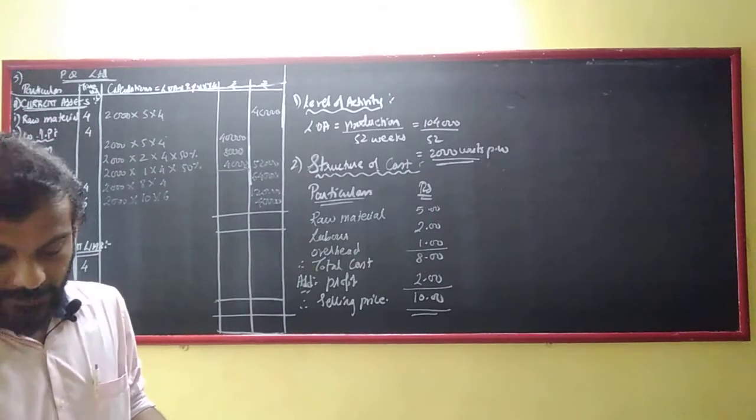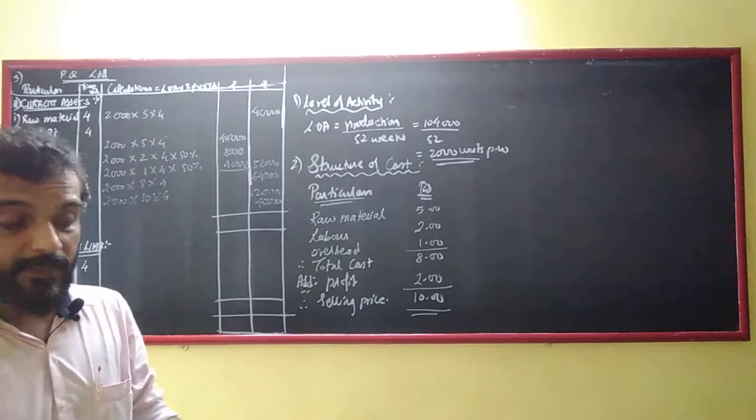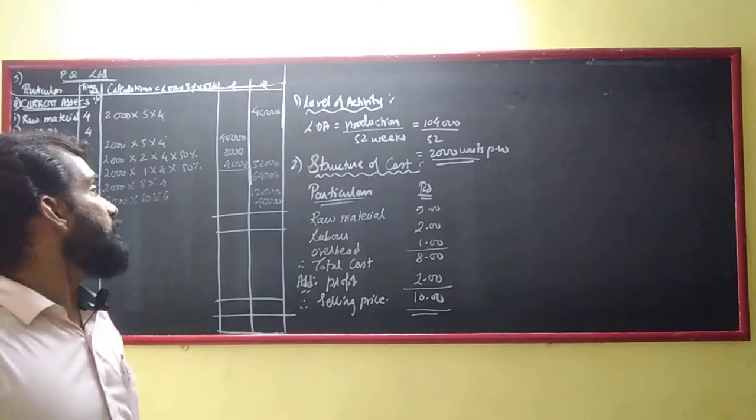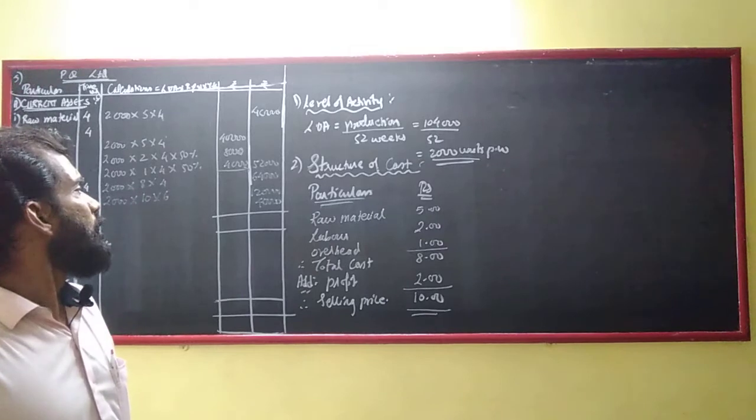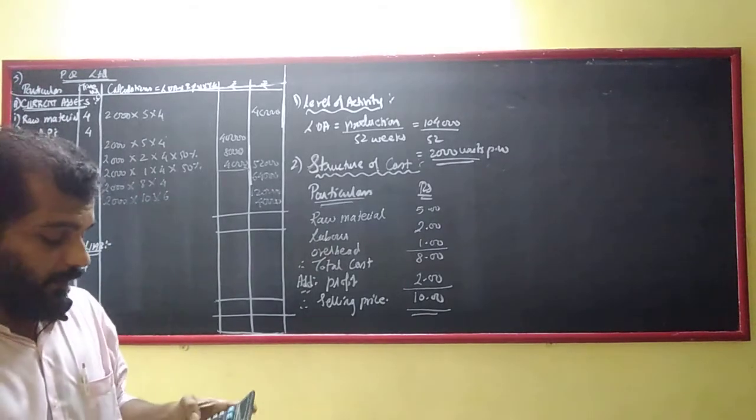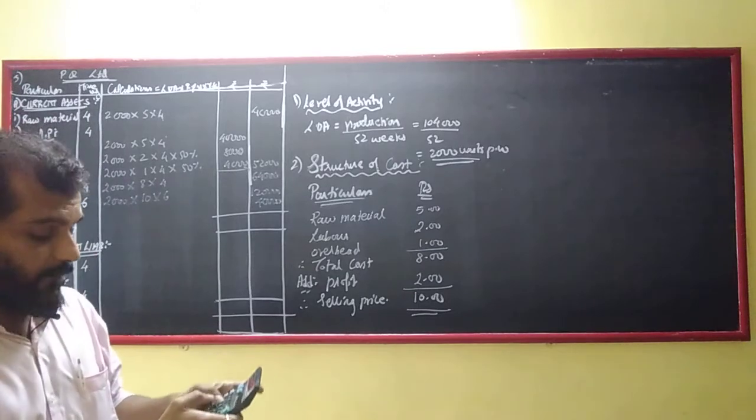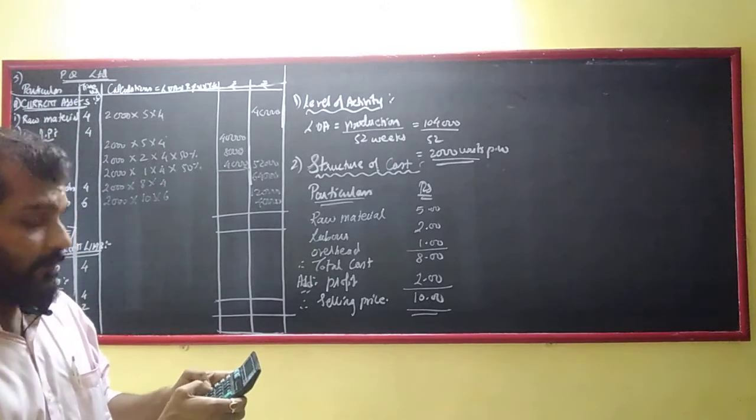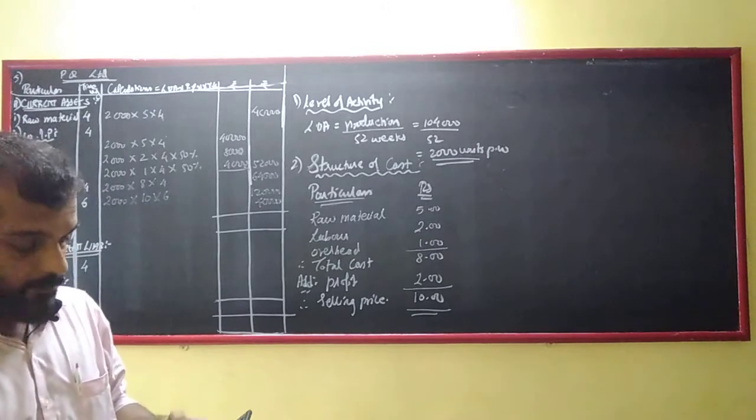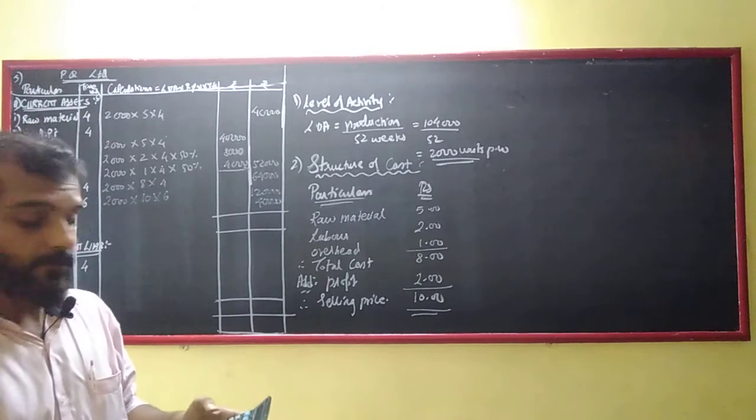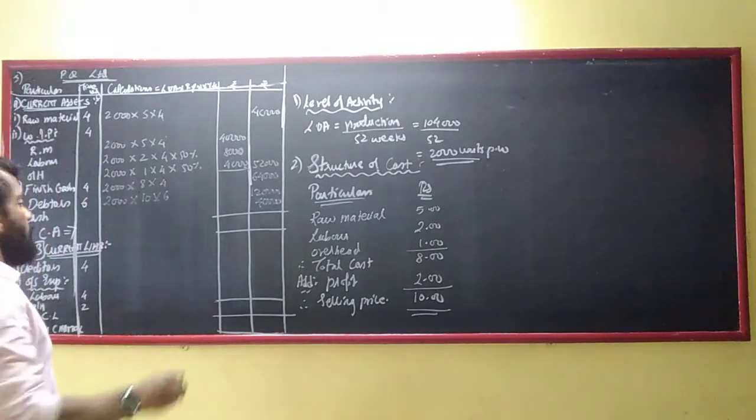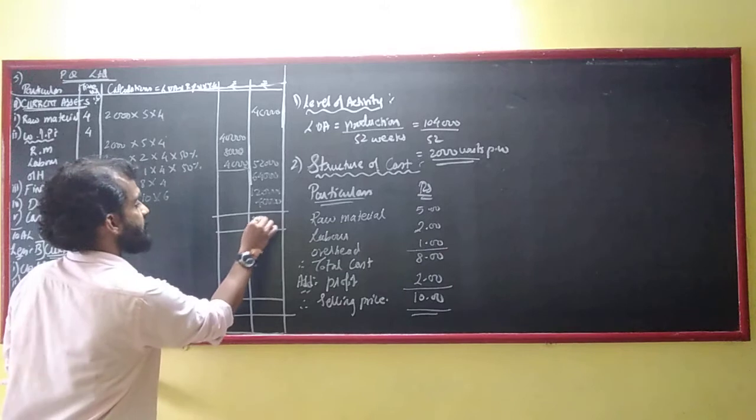Debtors: 2000 into 10 into 6 equals 120,000, plus cash 40,000. Total current assets: 40,000 plus 52,000 plus 64,000 plus 120,000 plus 40,000 equals 316,000.